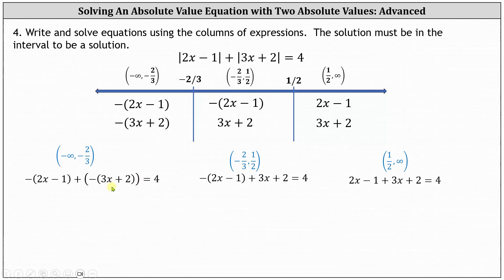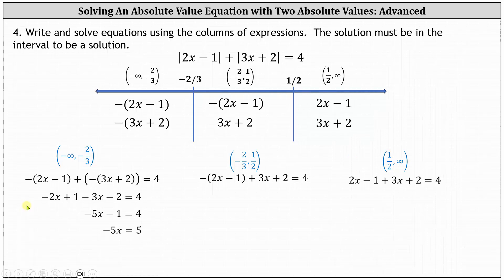Starting on the left, removing parentheses: the opposite of (2x minus 1) equals negative 2x plus 1, and the opposite of (3x plus 2) simplifies to minus 3x minus 2, still equal to positive 4. Simplifying, we have negative 5x minus 1 equals 4. Adding 1 to both sides gives negative 5x equals 5. Dividing both sides by negative 5, we get x equals negative 1. We check: negative 1 is less than negative ⅔, so it is in the interval. Therefore x equals negative 1 is a solution to the original absolute value equation.